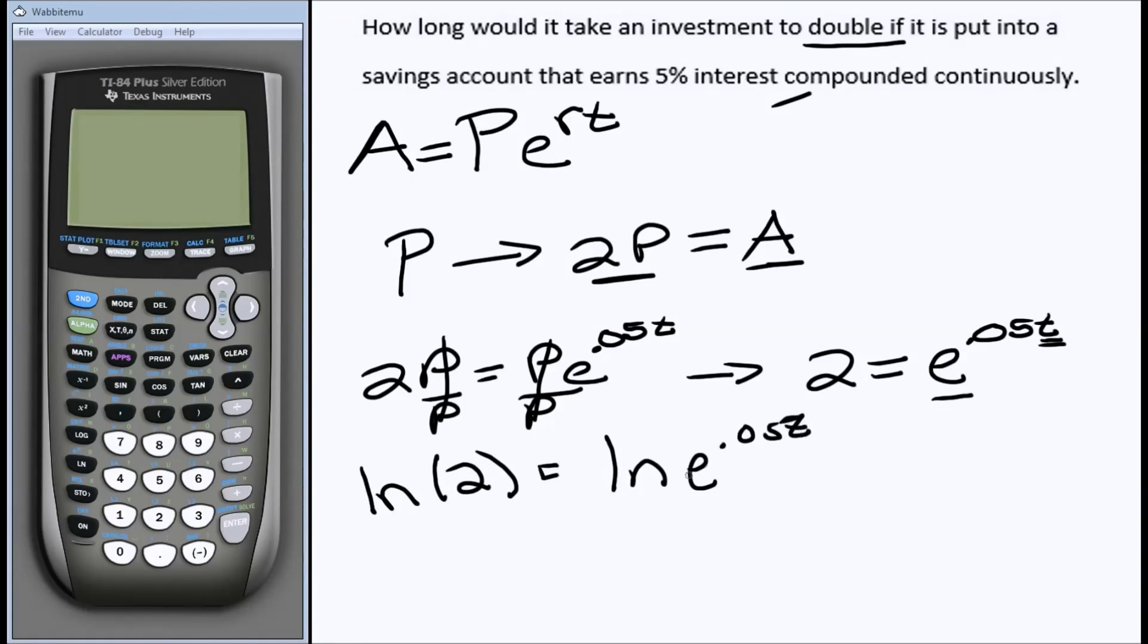Now, what we have here is some cancellation. If we remember our logarithm rules, it says that whatever the exponent is in a logarithm can be brought down in front as something multiplied by the logarithm. And then what's left is this ln of e. And this is a very special property. The reason why we use natural logarithm to begin with is that the ln of e is just 1. They kind of cancel each other out. So we have the ln of 2 is equal to, after that ln of e cancels out and that .05t is brought down, that's all that's left over here.